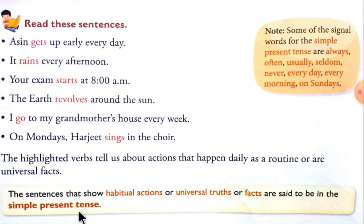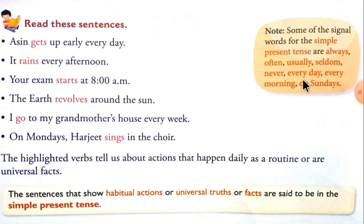Note: some of the signal words for the simple present tense are: always, often, usually, seldom, never, every day, every morning, on Sundays. These are the signal words.